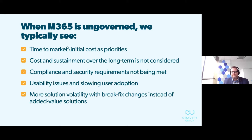In summary, when Microsoft 365 and its components are ungoverned, time to market and initial cost are the priorities driving that choice. Cost and sustainment over the long term aren't part of the equation early on, compliance and security requirements aren't being met, usability issues emerge — especially around search and filtering — slowing user adoption. And there's more solution volatility with changes focused on break-fix and cleanup rather than adding compliance, records management, and privacy components.